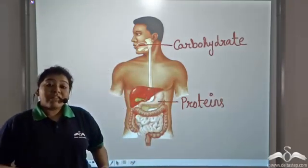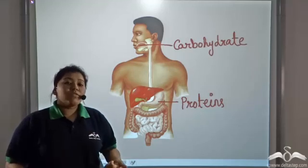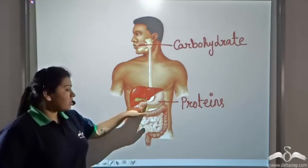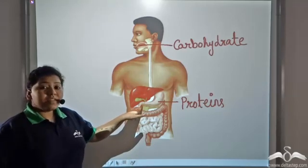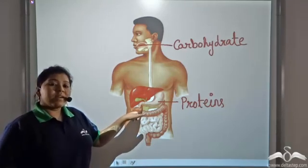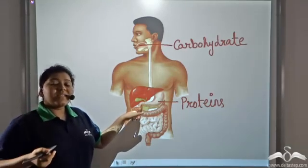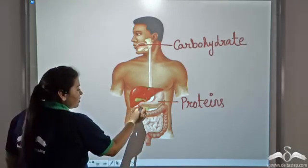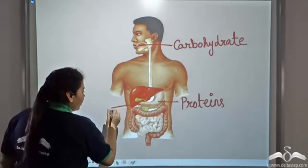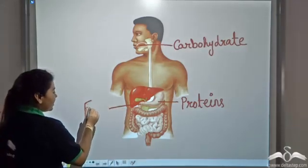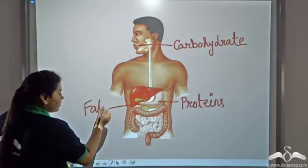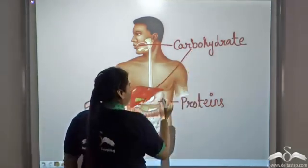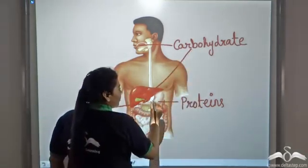Now after the food passes out of the stomach, it enters the duodenum where further carbohydrates, proteins as well as fats get digested. So this is the duodenum where fats are getting digested along with carbohydrates and proteins.